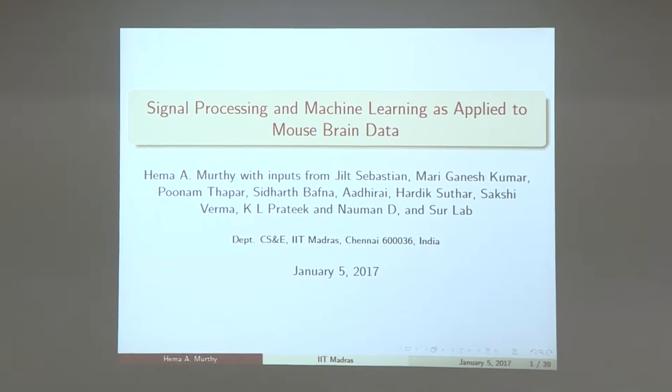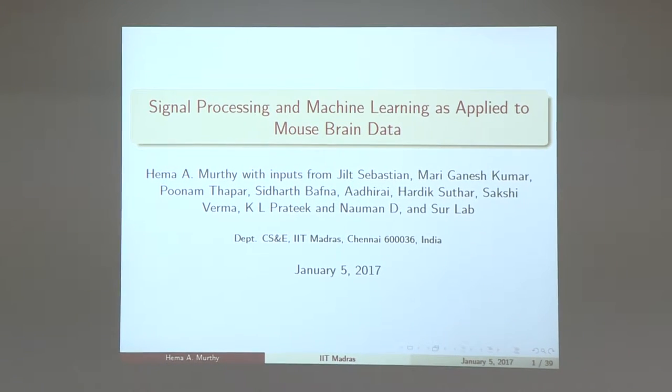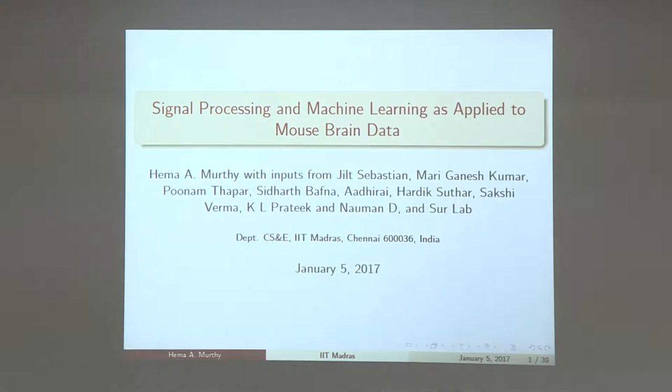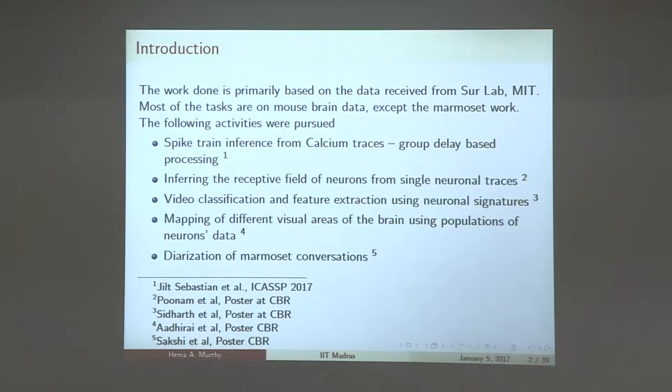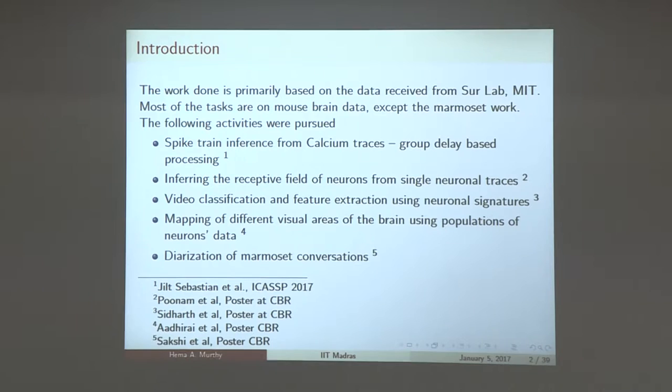We have learned a lot in the last few months. We have come a long way and we hope we'll be able to get you insights. Our objective is to look at signal processing and machine learning as applied to mouse brain data. We come from signal processing and machine learning backgrounds. We have taken a set of activities that we have pursued. One is spike train inference from single neuronal data to populations of neurons, and we have also looked at diarization of marmoset conversations.